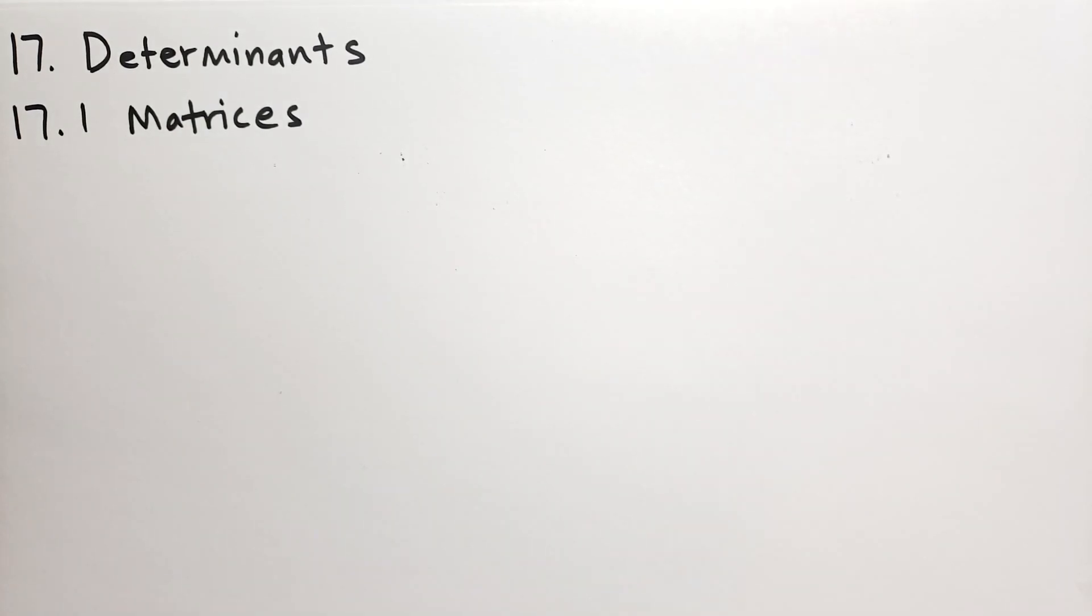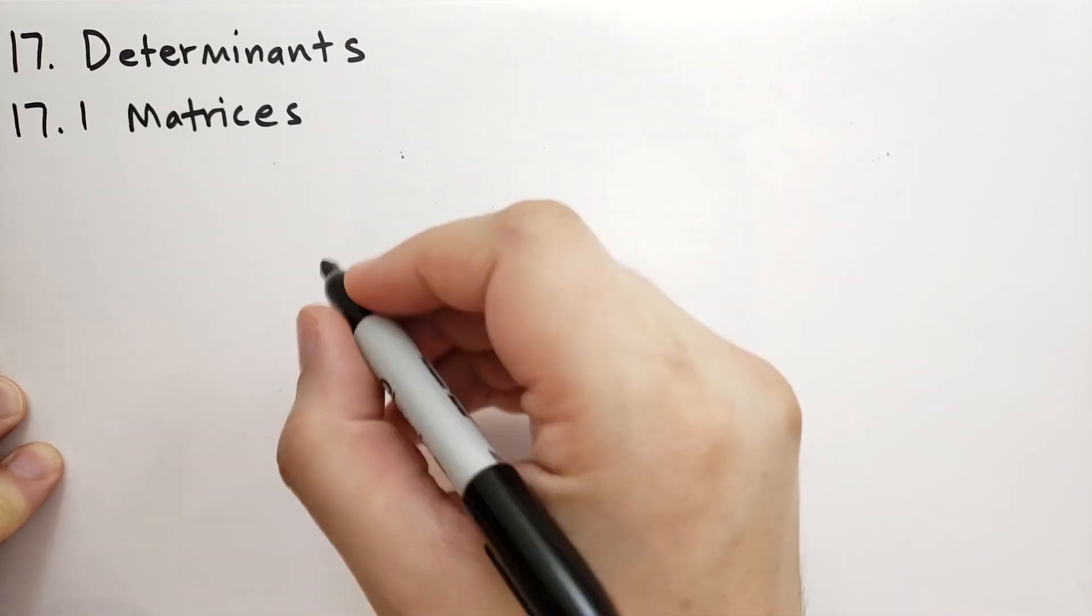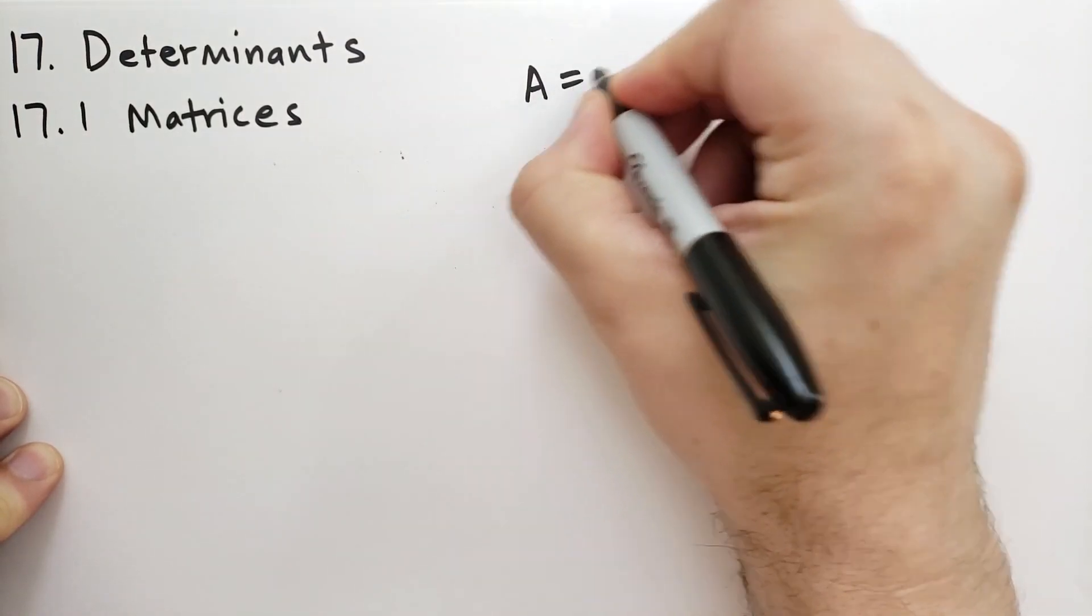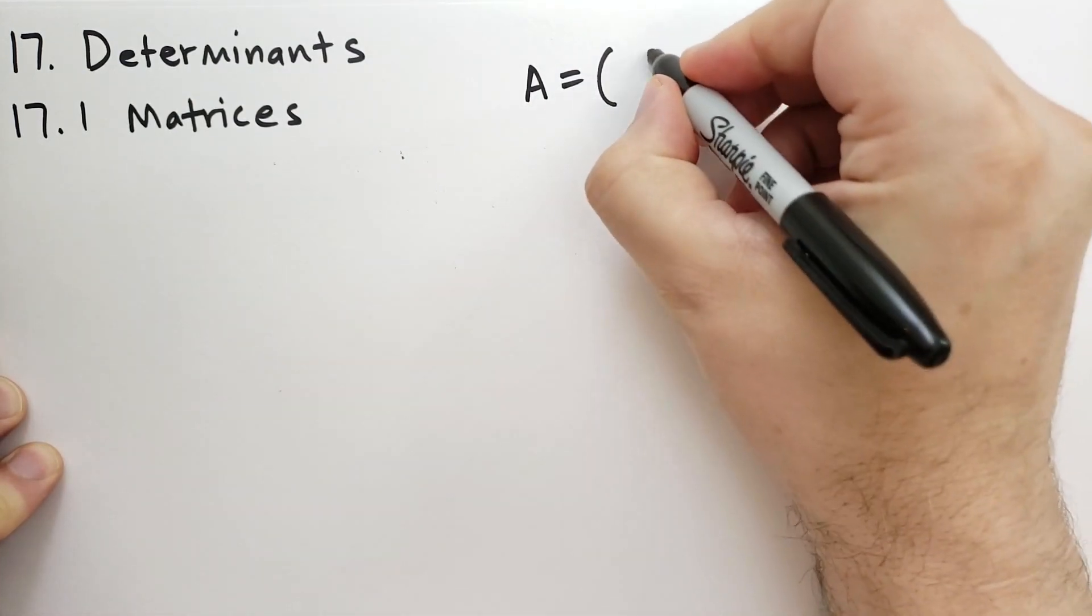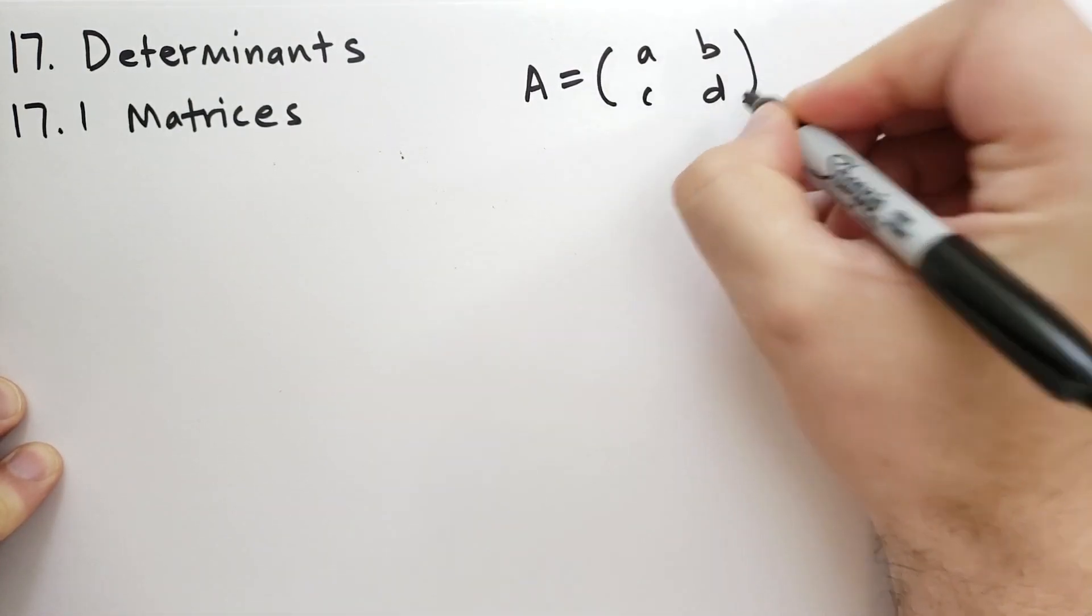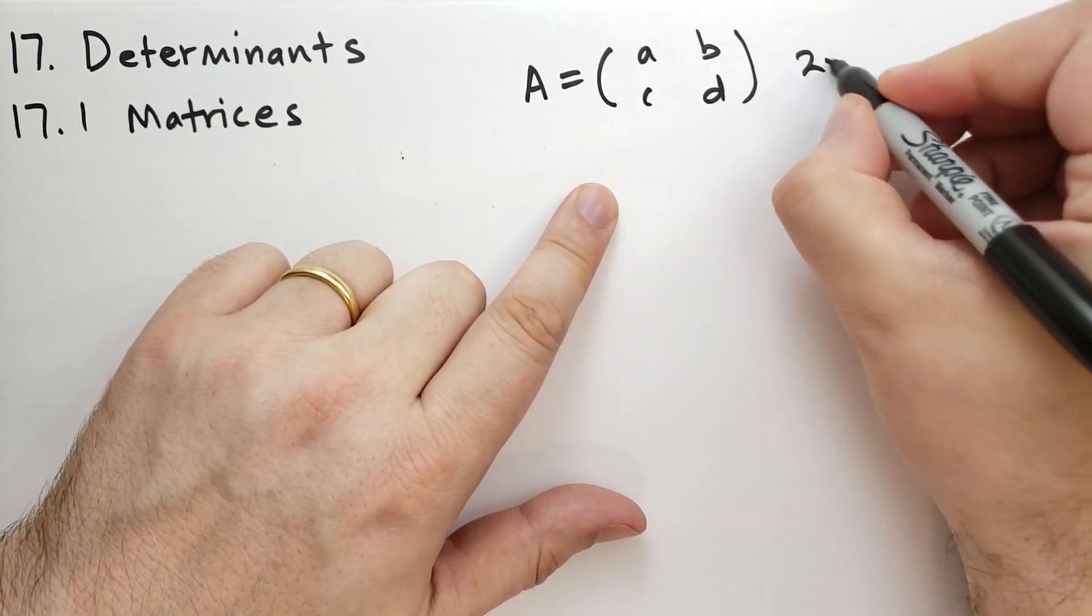Section 1 has to do with matrices. A matrix is an array of four numbers. Here, let's give an example. So we have A is equal to four numbers: A, B, C, and D. And we call this a matrix. This is a 2x2 matrix.